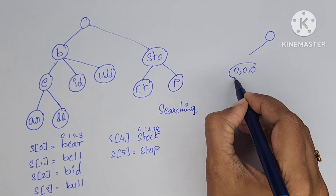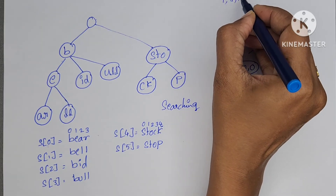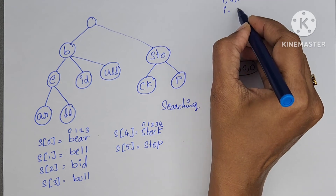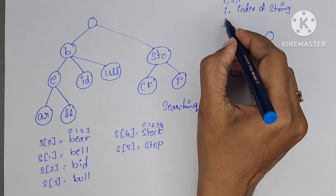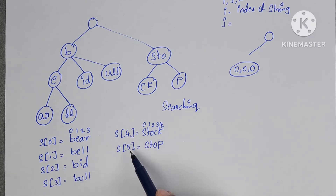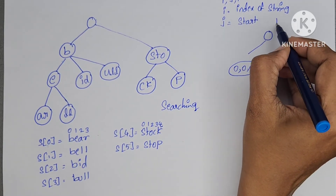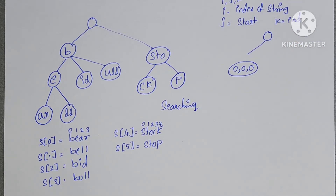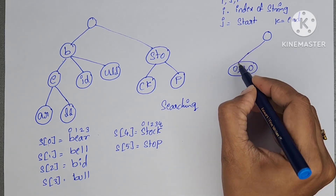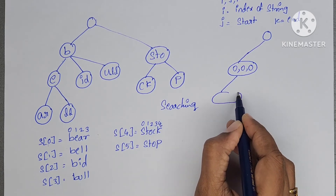For node B: it is present in the 0th string, starting index is 0, ending index is 0. For node E: it is also in the 0th string, starting index is 1, ending index is 1. The address of each node is written using these I, J, K values.